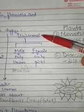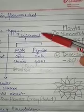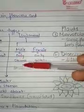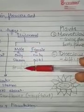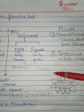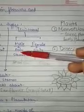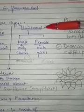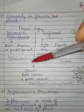Coming to unisexual flowers: unisexual flowers are the flowers which contain only one reproductive organ. If only the stamen is present, the flower is called a male flower or staminate flower. If only the pistil is present, it is called a female flower or pistillate flower. Example is papaya, where the male flowers are present on one plant and female flowers on another plant. These are the three different types of flowers seen in nature: bisexual, neuter, and unisexual.